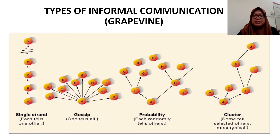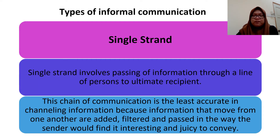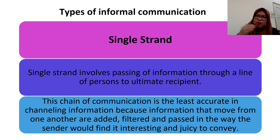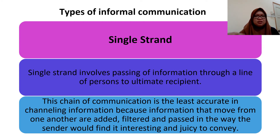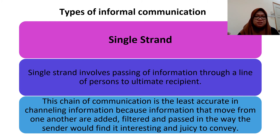Now for the detailed explanations. Single strand is the even passing of information through a line of persons to the ultimate recipient — from one person to the other. However, it takes a longer time, and as the information is passed along, people tend to add more details or might lose some information during the transfer.